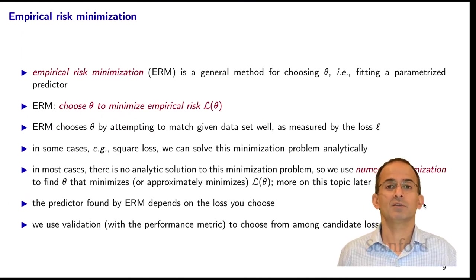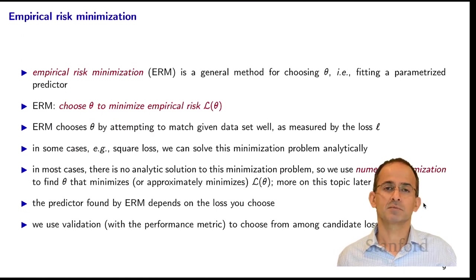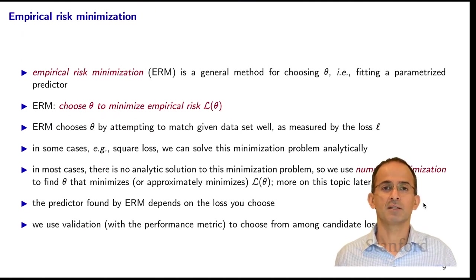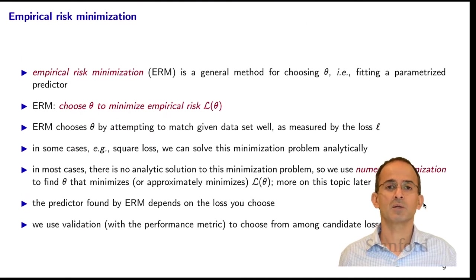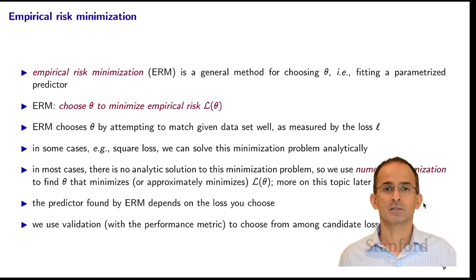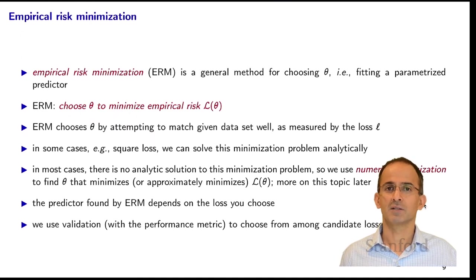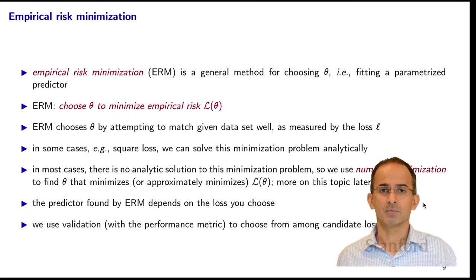In most cases there is no analytic solution to the minimization problem, and instead we have to use numerical optimization to find a theta that minimizes the empirical risk. Usually it's slightly worse than that: numerical procedures cannot guarantee to find the theta that actually minimizes the empirical risk, but can only guarantee to approximately minimize it. But there are reasons why that's okay — we typically don't want or need a perfect minimizer; an approximate minimizer is fine.